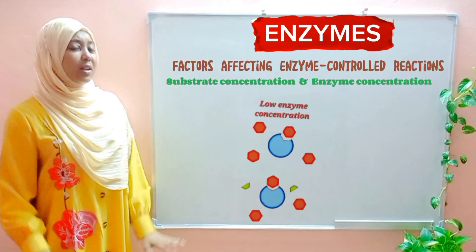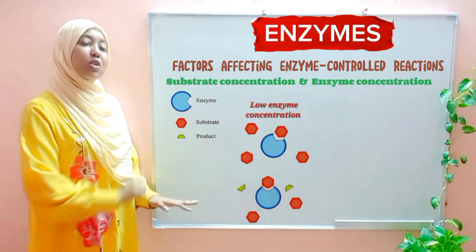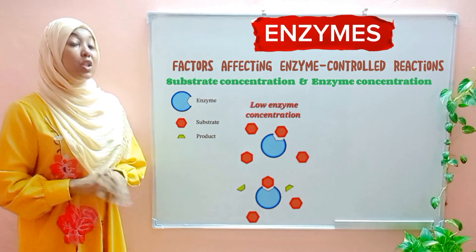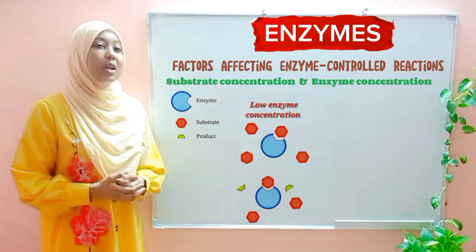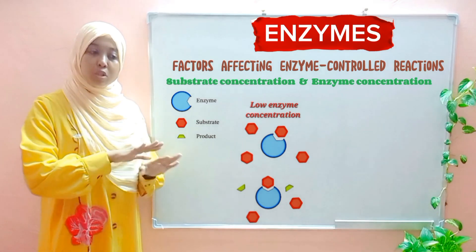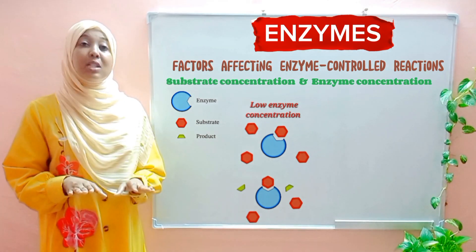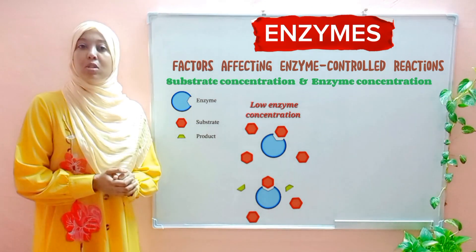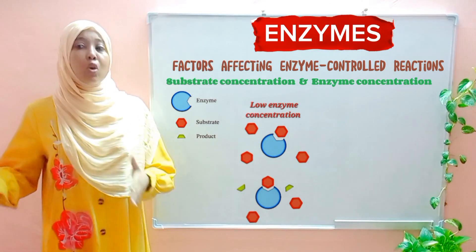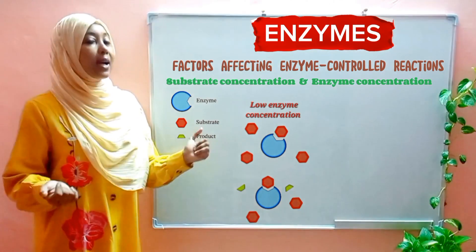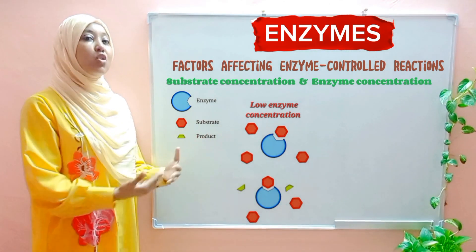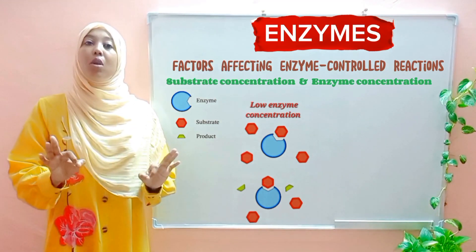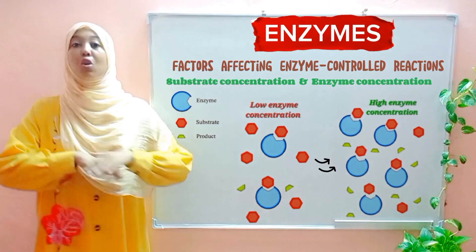What if it were the reverse — high substrate concentration and low enzyme concentration? Initially, the rate of reaction will increase, but it will reach a point where it slows down because all the active sites of the enzymes are occupied by substrate. There will be a long queue of substrate molecules awaiting their turn at the active site. To increase the reaction rate at this point, simply increase the concentration of the enzyme.